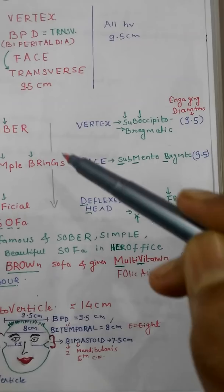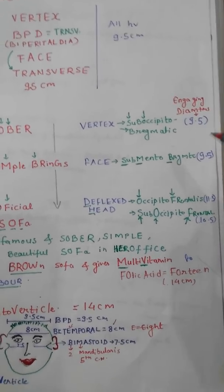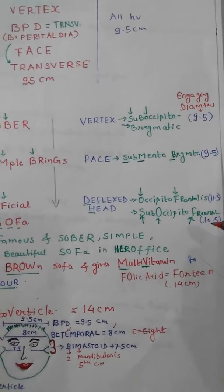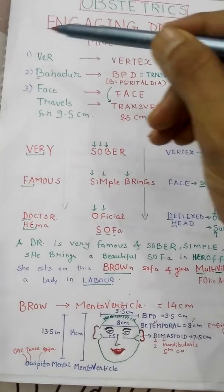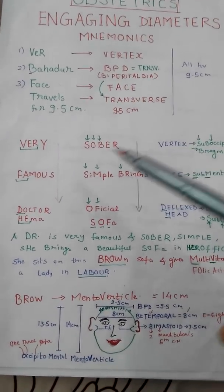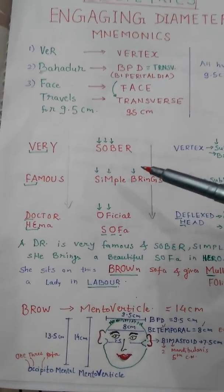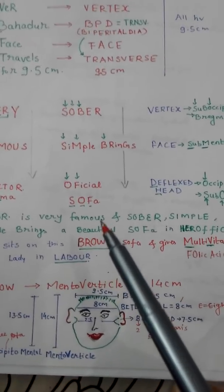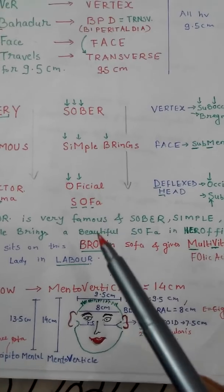The engaging diameters for these conditions reading top downward are 9.5, 9.5, 11.5, and 10.5. In one line remember: very famous Dr. Hema, sober, simple, brings official sofa — and imagine she is sitting on a brown sofa in her office.